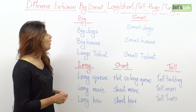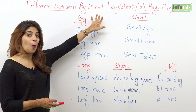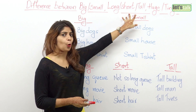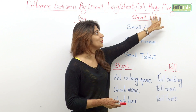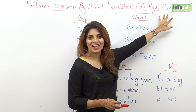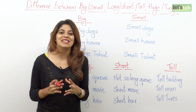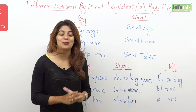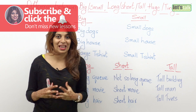Adjectives like big, small, long, short, tall, huge, or tiny. So how to use these simple adjectives in English? Well, that's what we are going to look at.